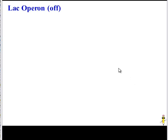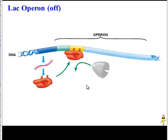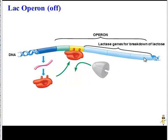Now let's see how the operon controls that process. In bacteria, the lac operon controls the transcription and translation of lactase genes, and the operon is usually off — that's the default setting. So here's what the lac operon looks like: we have three different genes that code for lactase, the promoter upstream, the operator upstream, and somewhere far away is the regulatory gene.